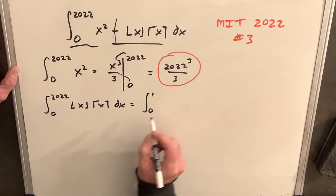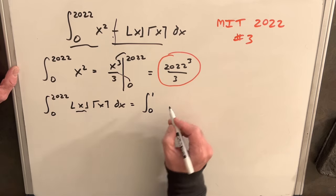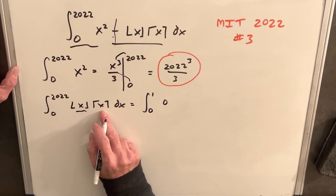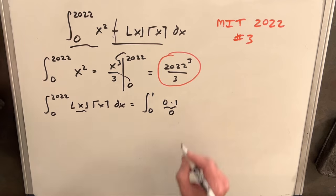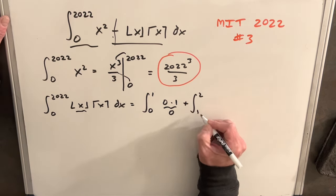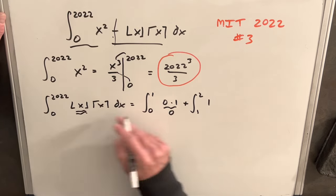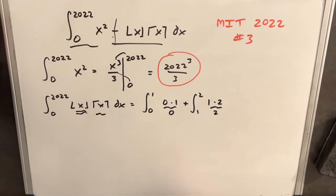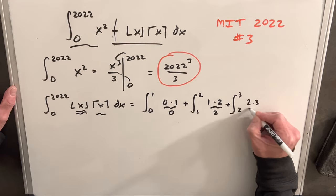For this first segment, from 1 to 0, the floor is 0 and the ceiling from 0 to 1 is 1, so this first piece is 0. Then from 2 to 1, our floor is 1 and our ceiling is 2, so this is 2. We'll continue this way. Of course, I'm not going to write all that out. There's going to be dx's in all these.